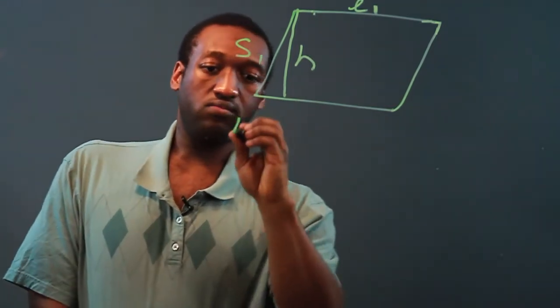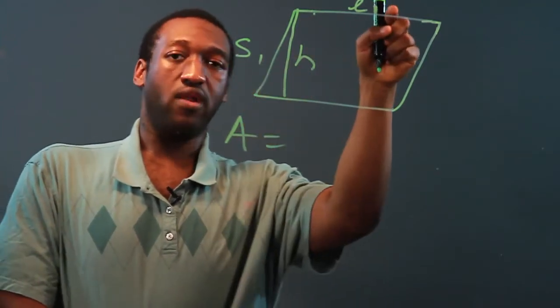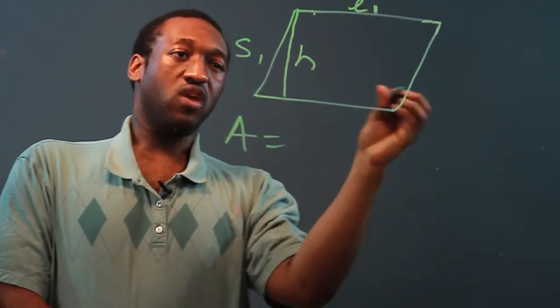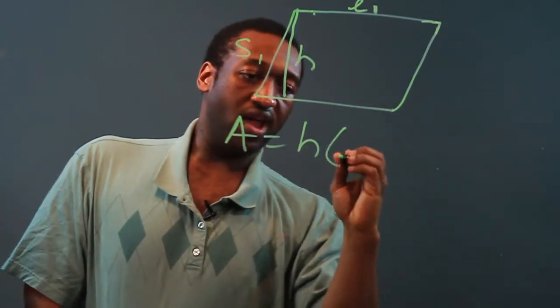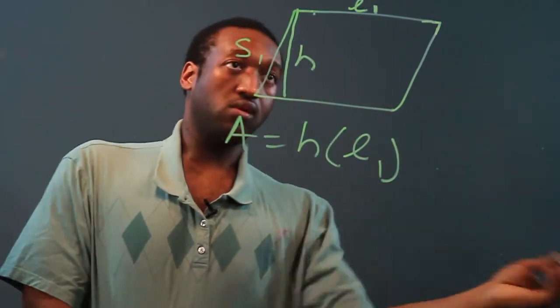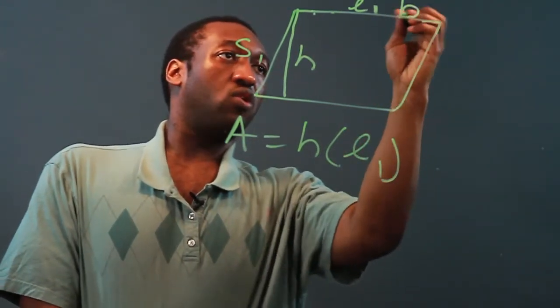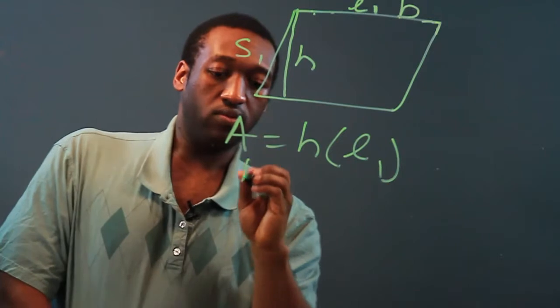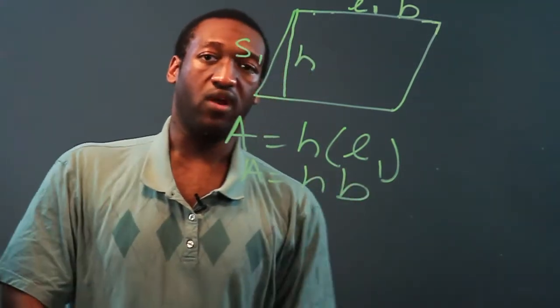Now, for area, don't make the mistake of multiplying side 1 by L1 as we would in a rectangle. Instead, we're going to multiply the height by the length. You may also see in some books that this length is called a base, so this translates to the formula height times base for a parallelogram.